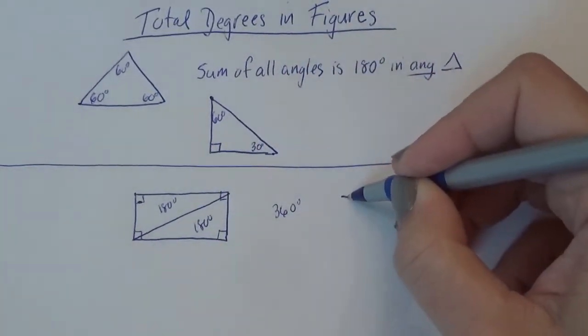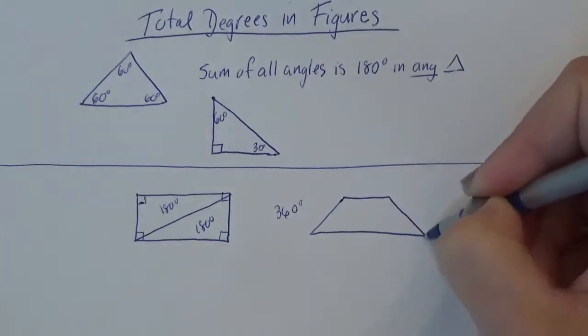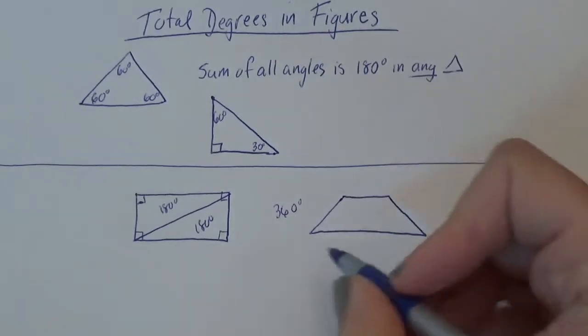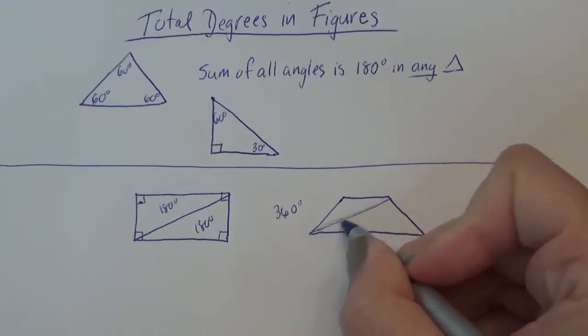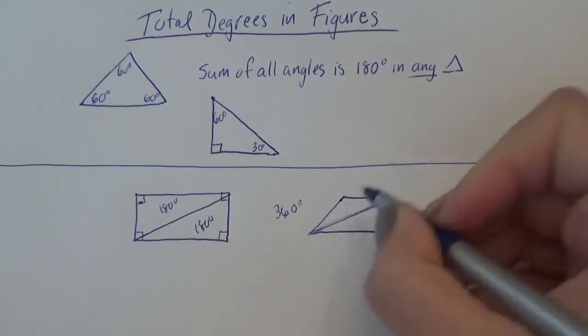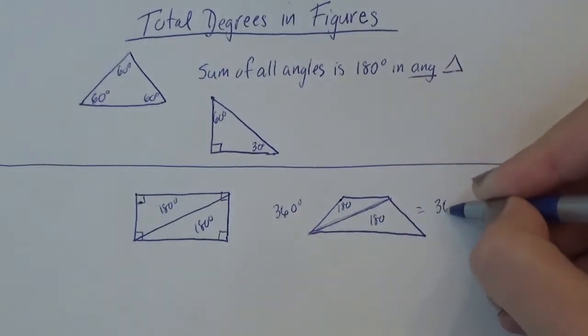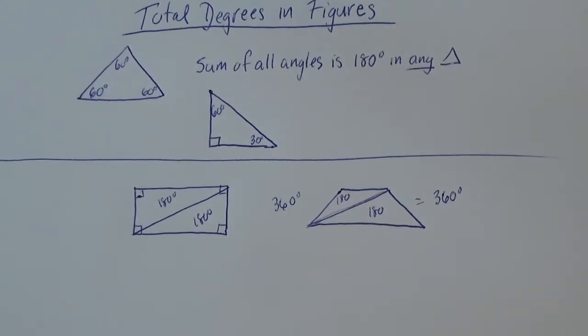Let's say I drew a trapezoid. Those don't have 90s. I wouldn't be able to guess these angles. So check it out. Go corner to corner. Cut it. You get a triangle and a triangle. This one's 180. This one's 180. Again, any four-sided shape would be 360. You can memorize that or you can figure it out every time.